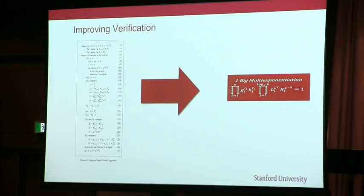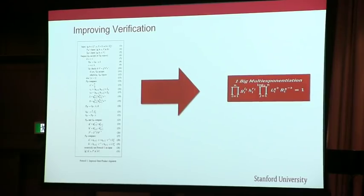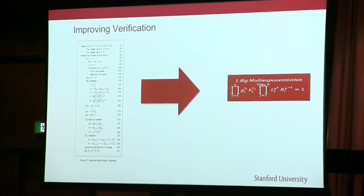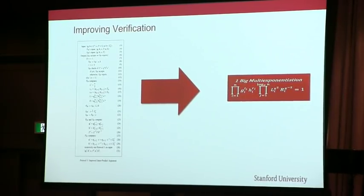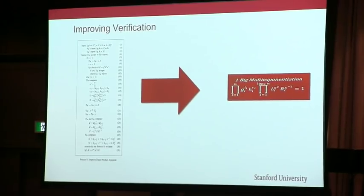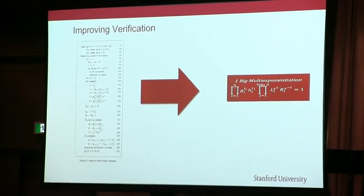Let's talk about the verification time, which I said was linear. We did some work on trying to improve that. The mathematical verification code looks complicated, but if you implement it smartly, you can reduce it to something called a multi-exponentiation — you have a bunch of exponents and generators and compute their product. There are tricks to improve multi-exponentiation: if you have a multi-exponentiation of size N, you can do it in roughly N over log N steps.